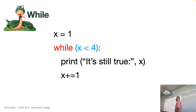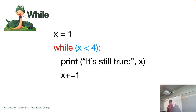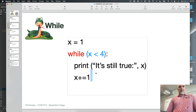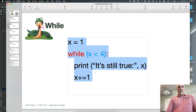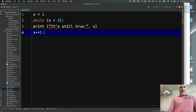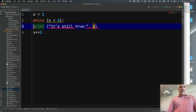Here we have another example of a while loop which starts with x equals 1, and the while condition is while x is less than 4. It will execute these two lines of code, which are both indented at the same level beneath the while expression. So this will print 'it's still true, x' and then add one to the value of x. Let's take a quick look at this in context — I'm going to copy and paste that code directly into my editor.